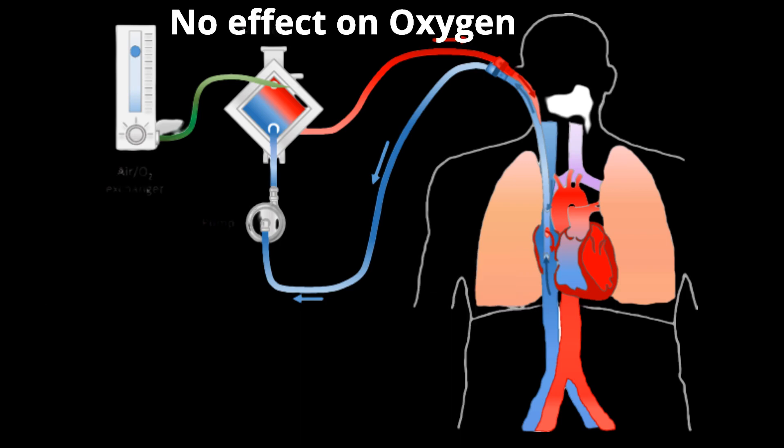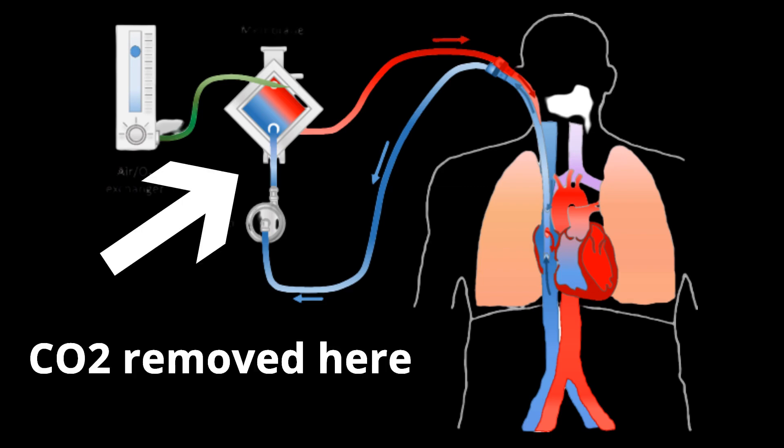While the amount of oxygen exchanged through the natural lung is unmodified by the extracorporeal circuit, the carbon dioxide eliminated by the natural lung decreases in proportion to the carbon dioxide eliminated through the extracorporeal lung.